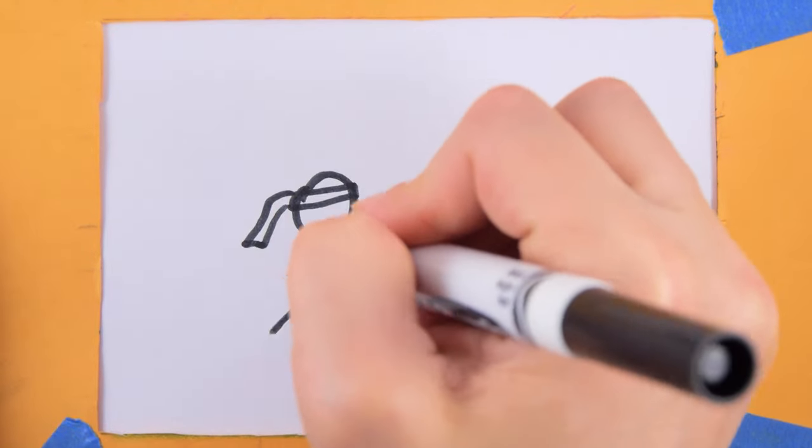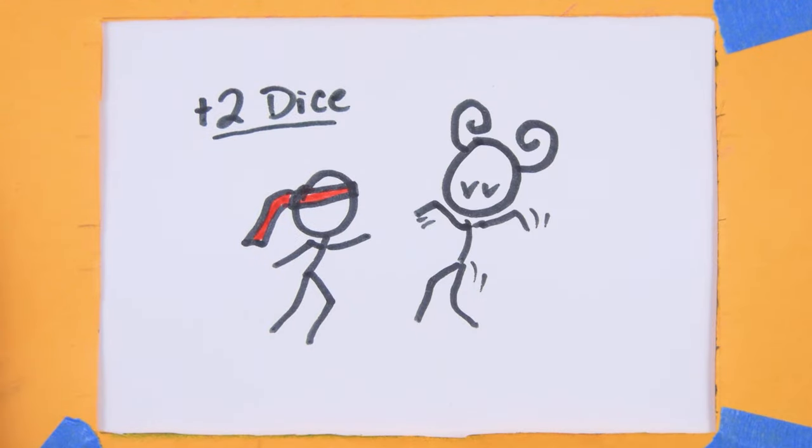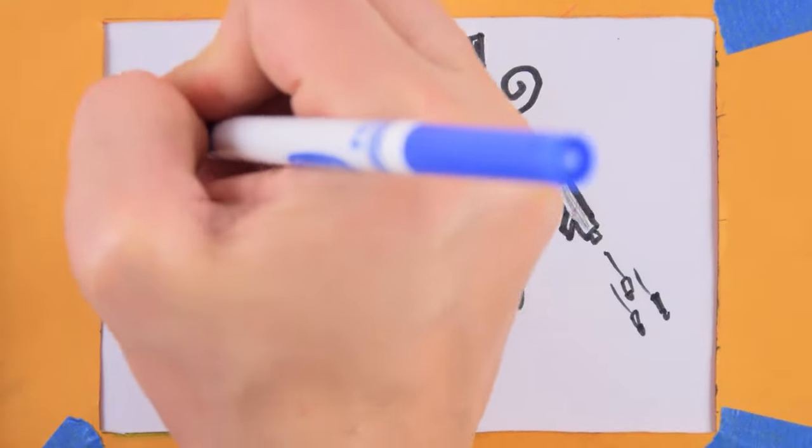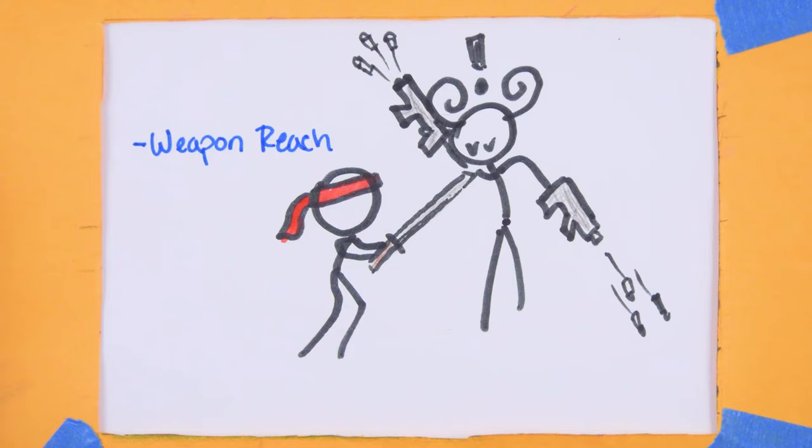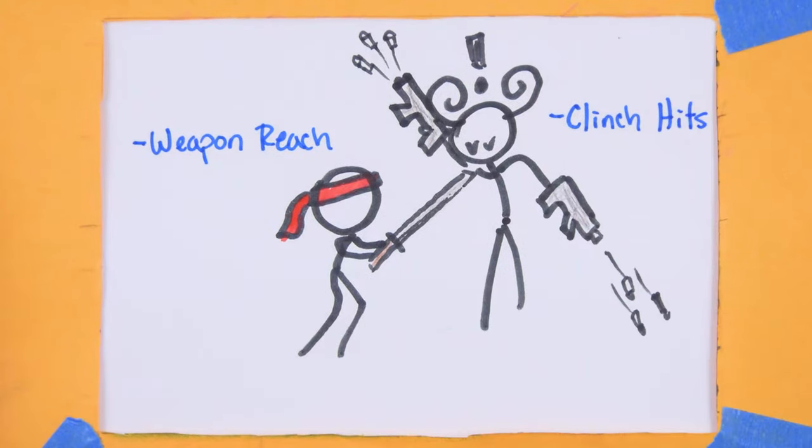The character who engaged the clinch, hopefully you, gains the superior position modifier to all melee actions, a bonus of plus two dice, while maintaining the clinch. Reach modifiers are negated for both combatants. Melee weapon attacks suffer a penalty equal to their reach, if any at all, and attacks with firearms suffer a penalty equal to the net hits scored on the initial clinch test.